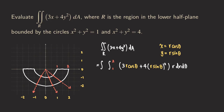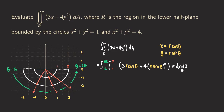Now for the θ limits, we just look at the region. We start from the lower angle, which is θ = π on the left side of the x-axis, and we keep going around through the lower half plane all the way to θ = 2π. So the angle θ goes from π to 2π. Now we have the full double integral set up in polar as an iterated integral.